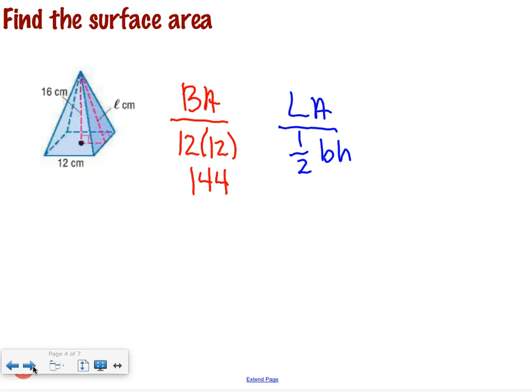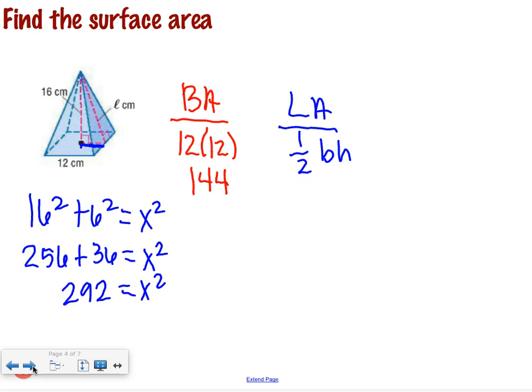Pythagorean theorem. So I know this would be 16, but what would this distance be? 6. Nothing gets past you. We're good. So 6 squared plus 16 squared equals x squared. 36 plus 256 equals x squared. Square root of that is about 17.